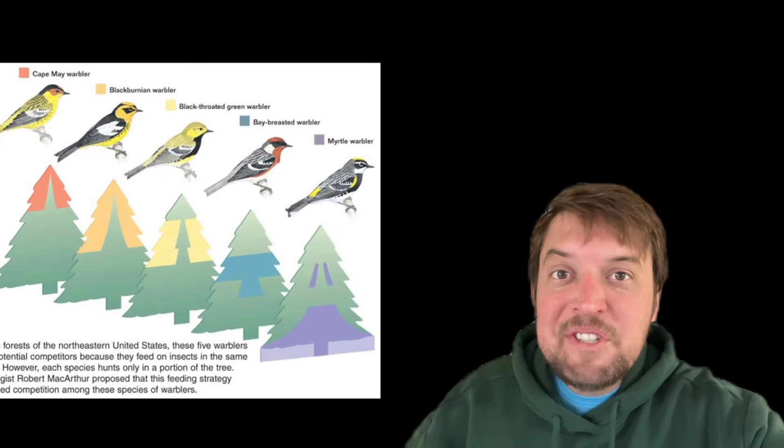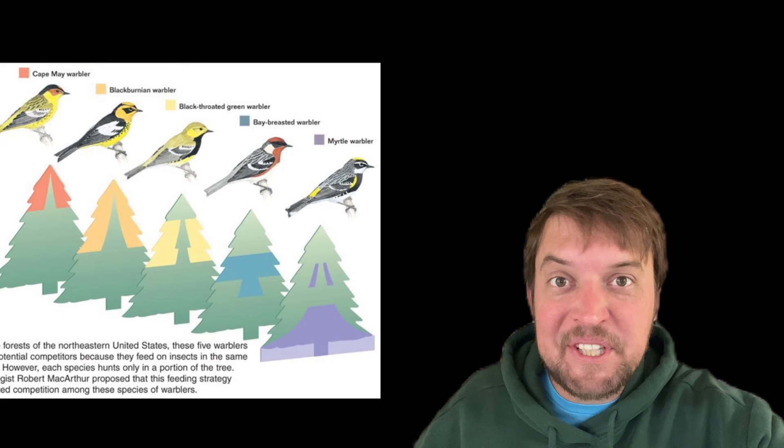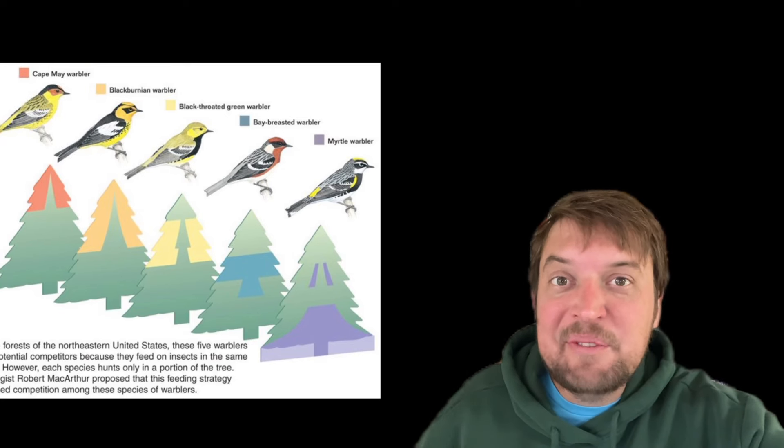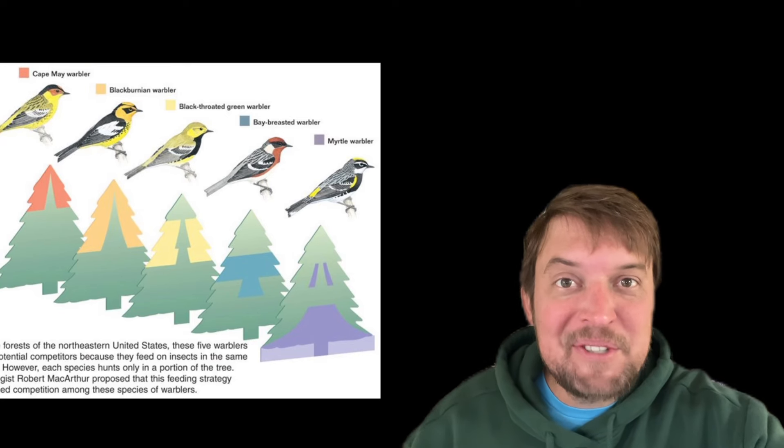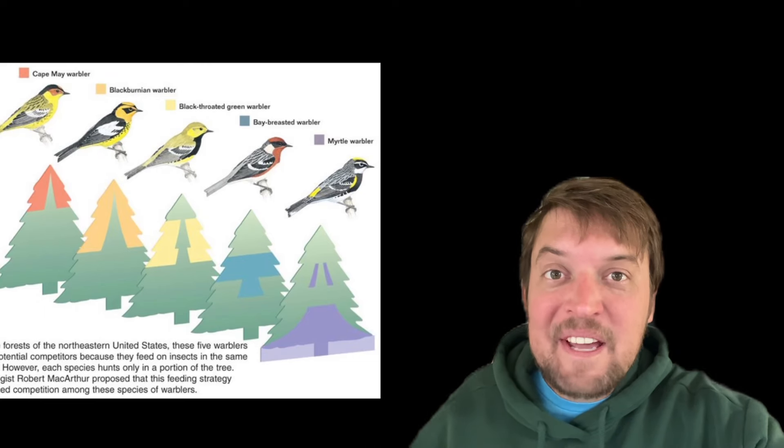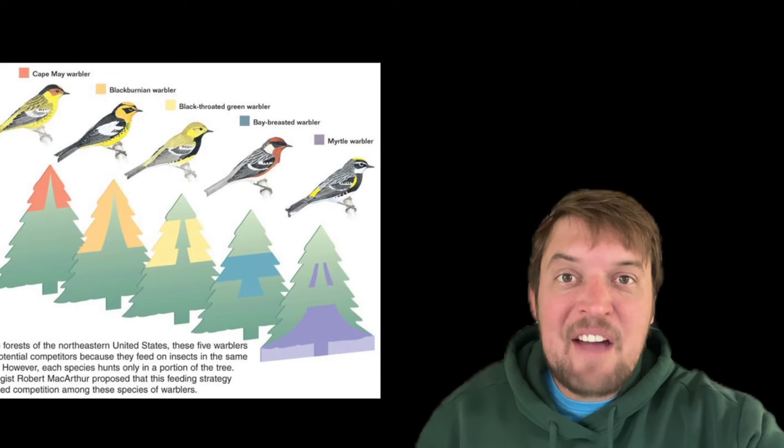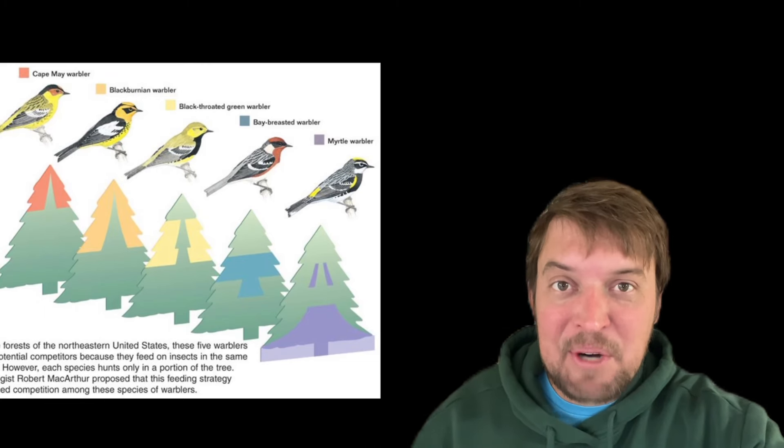The Cape May warbler forages in the valuable top part of the tree, and the Myrtle warbler is resigned to forage in the bottom of the trees. And when they stay in their own lane, they compete with each other less and have access to different insect prey.